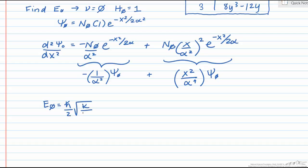Now the square root of k over m is just the frequency of oscillation of a classical harmonic oscillator of the same mass and force constant. This is often denoted as omega, so let's make this substitution here to define our zero point energy.